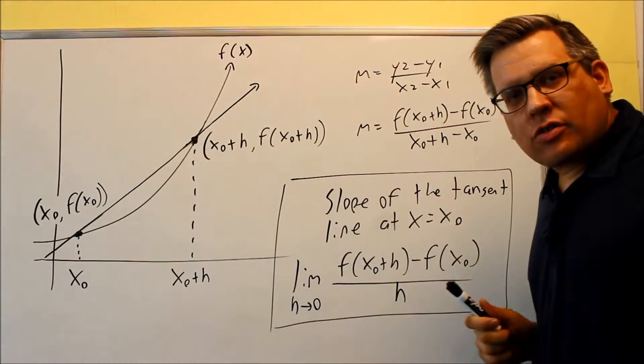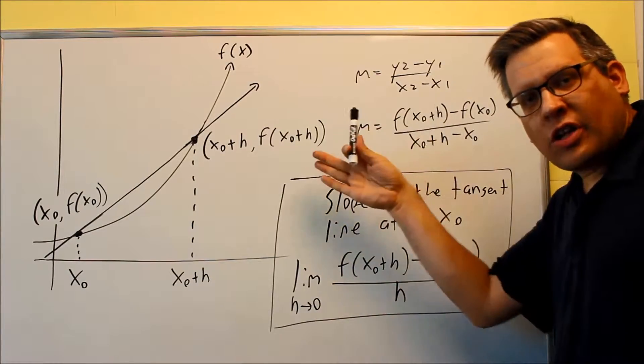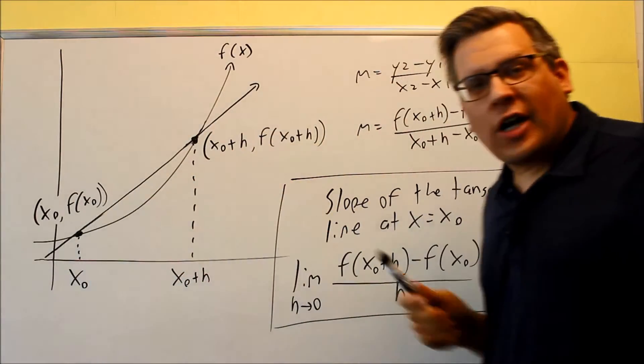Now in pre-calculus, you talked about slope, but you only would have done slope for straight lines. We're going to use that idea in order to come up with a formula for the slope of a curved line at a certain point.